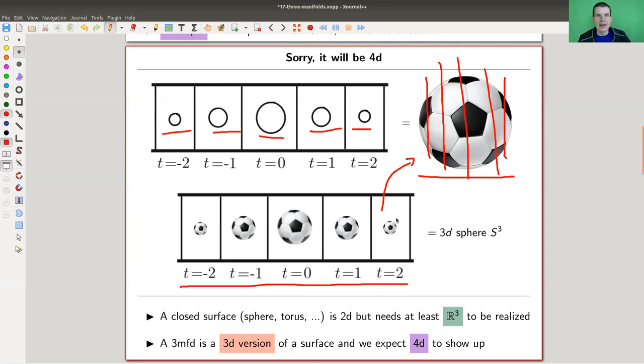This is really the analogy that we have seen in the two-dimensional world. All these two-dimensional objects, the closed ones, the sphere, the torus, whatever they were, they needed at least R³ to be realized. They don't live in R². It's the same here, you need at least R⁴, one more, to realize a closed three manifold. That makes things a bit tricky of course because now we are living in a dimension that's not super easy to imagine anymore.